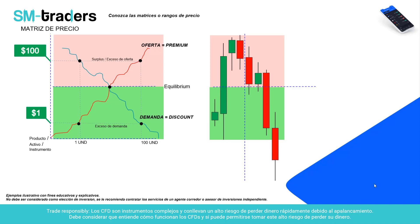Estamos viendo un esquema de una matriz de precio. Tenemos una zona rosada que podemos definir como zona de oferta, también llamada Premium, y la zona de demanda llamada Discount. Hay un punto de equilibrio que es el punto medio, donde se realizan los precios equilibrados. Cuando tenemos precios muy altos se denomina surplus o exceso de oferta, y cuando tenemos precios muy bajos se produce el exceso de demanda. Por lo general, se busca un equilibrio de los precios.